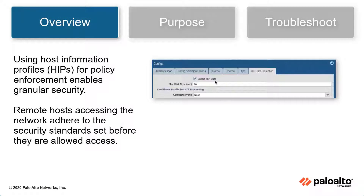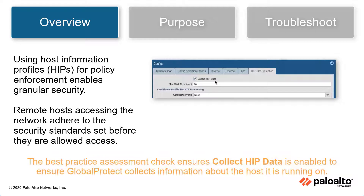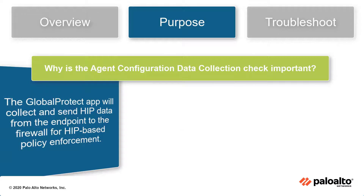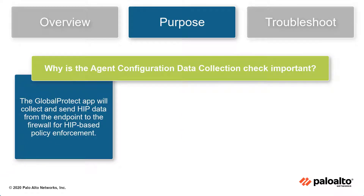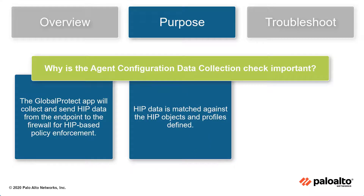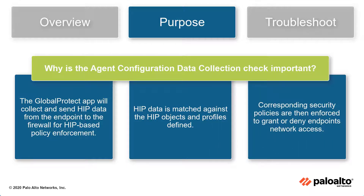Using Host Information Profiles, or HIP, for policy enforcement enables granular security. Remote hosts accessing your network adhere to the security standards set before they are allowed to access the network. The Collect HIP Data Best Practice Check ensures GlobalProtect will collect information about the host it is running on. The GlobalProtect app will collect and send HIP data from the endpoint to the firewall for HIP-based policy enforcement. HIP data is matched against the HIP objects and profiles defined, and corresponding security policies are then enforced to grant or deny endpoint network access.